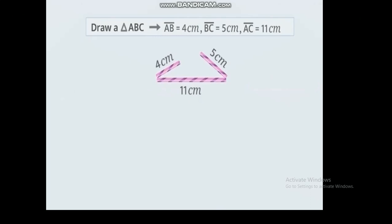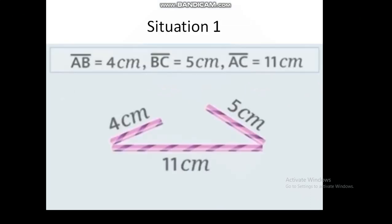We are not able to construct a triangle with these lengths. In situation 1, construction of a triangle is not possible because the sum of two sides is less than the length of the third side.